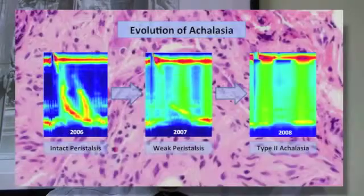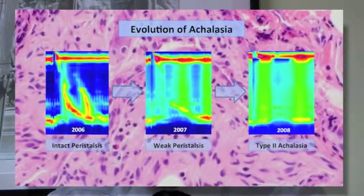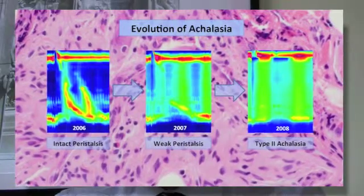The major modalities utilized to establish the diagnosis of Achalasia are the timed barium esophagram, the endoscopy, and the esophageal manometry. Both esophagram and endoscopy may be normal in early Achalasia. Hence, manometry has become the gold standard for diagnosing Achalasia, and high resolution manometry has improved the accuracy of manometry in detecting early stages of Achalasia.